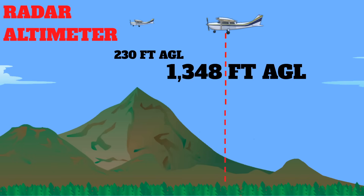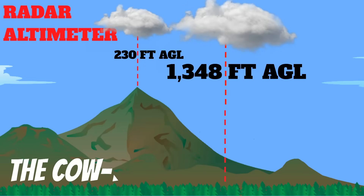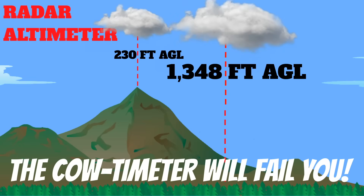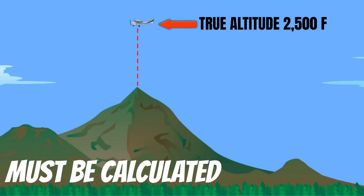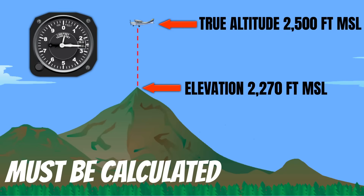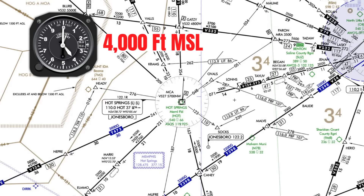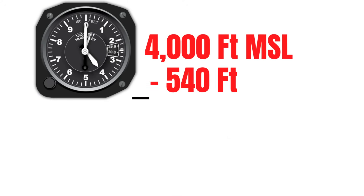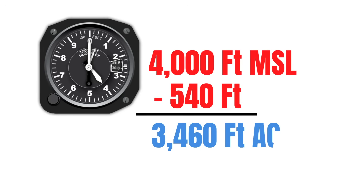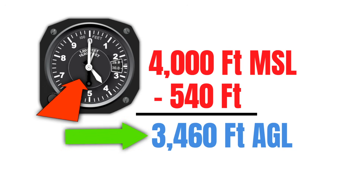Keep in mind, if you don't have a radar altimeter, or you're in the weather and you can't see the ground, the old cow-timeter isn't going to work for you either. In this situation, the only way you can find your absolute altitude is to calculate it. And the way you do that is to take your true altitude and subtract the height of the terrain in that area. Your altimeter isn't perfect, but it's going to give you a pretty close estimation of your true altitude, which is your height above sea level. So, if your true altitude is 4,000 feet MSL, and you look down at your IFR low chart and see that the elevation in that area is 540 feet MSL — like it is here at Hot Springs, Arkansas — then you can subtract 540 from 4,000 to get an absolute altitude of 3,460 feet AGL. Don't forget, your altimeter is not perfect, so neither is this altitude, but it should be pretty close.